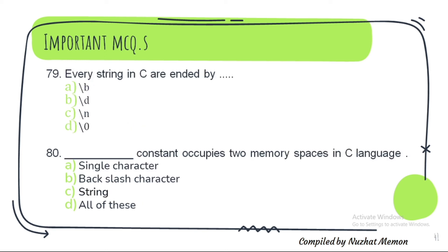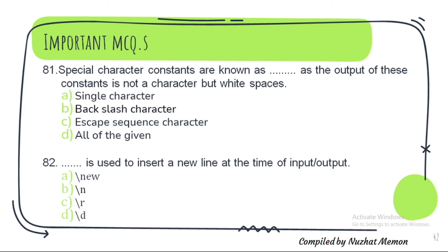Question 79: Every string in C is ended by backslash zero (\0). Question 80: String constant occupies two memory spaces in C language. Question 81: Special character constants are known as backslash characters, as the output of these constants is not a character but white spaces.